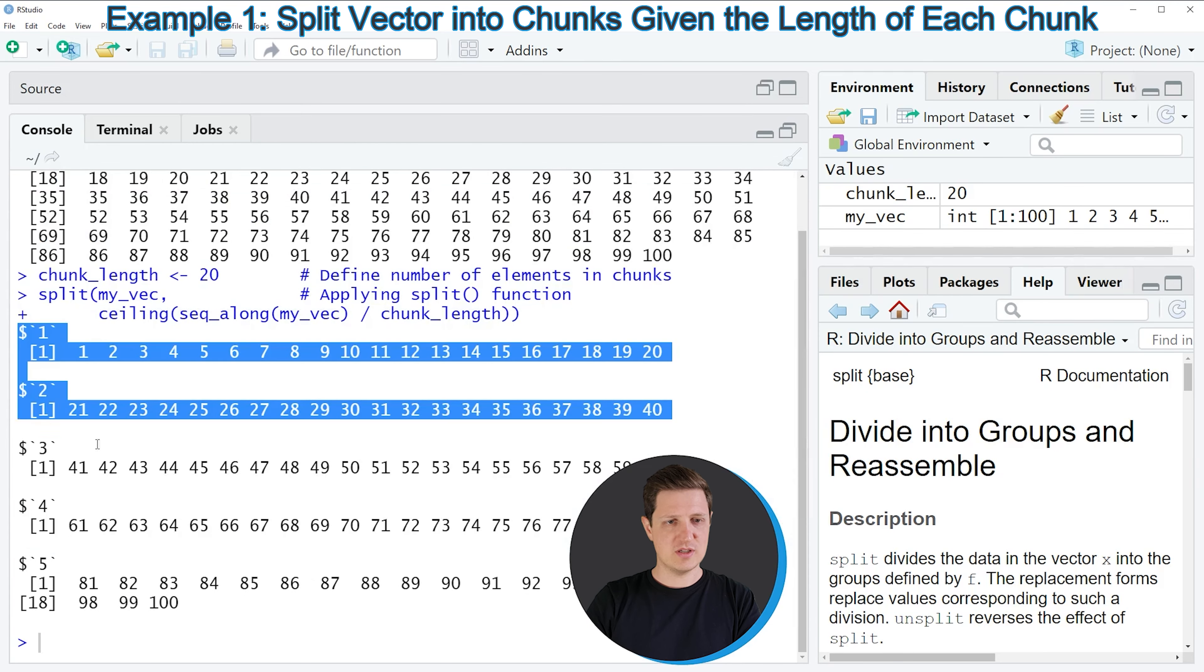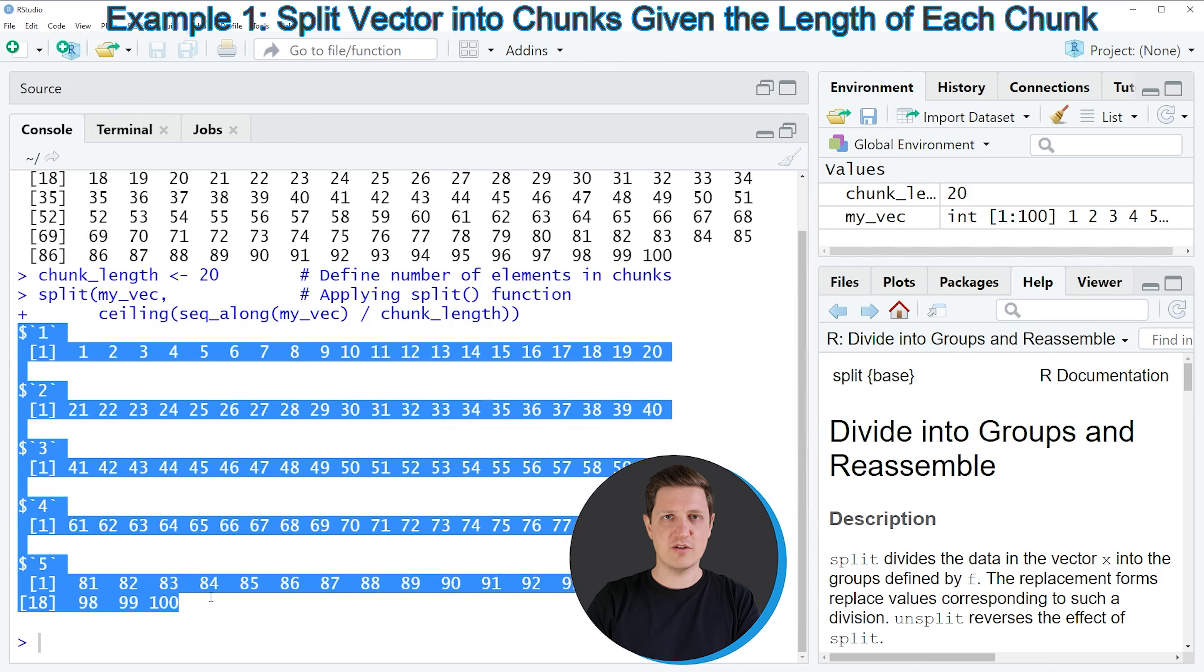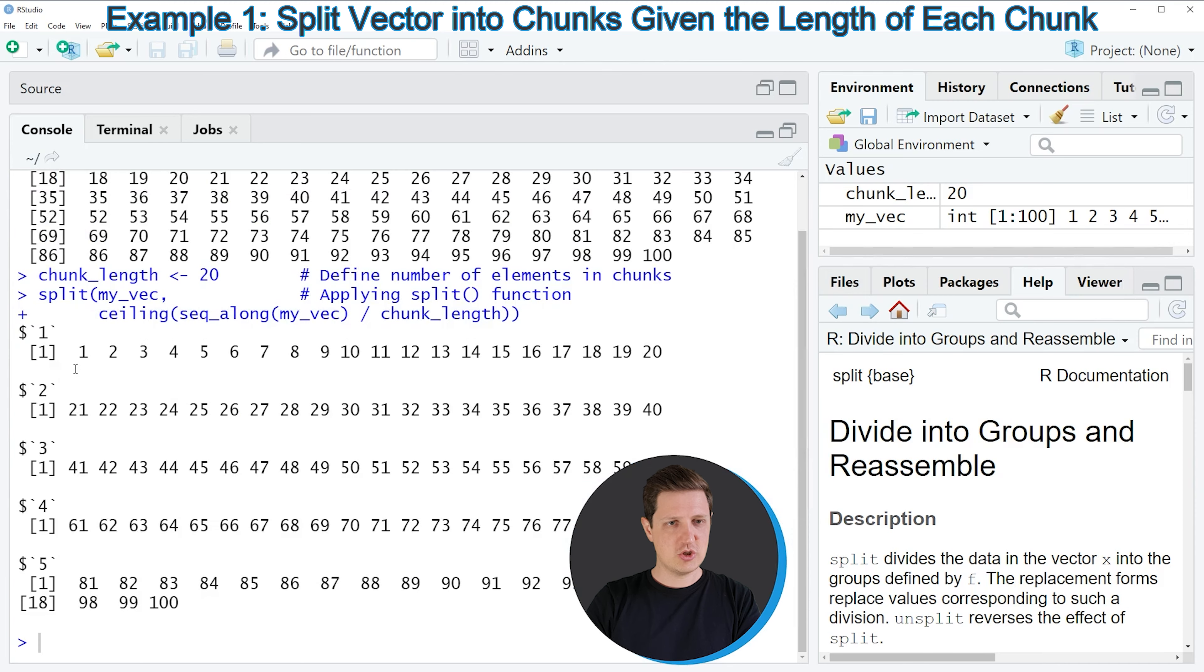As you can see, this output is a list consisting of five list elements, and each of these list elements consists of 20 numeric values. The first list element consists of the first 20 values of our input vector. The second list element consists of the 21st to 40th element of our input vector, and so on.